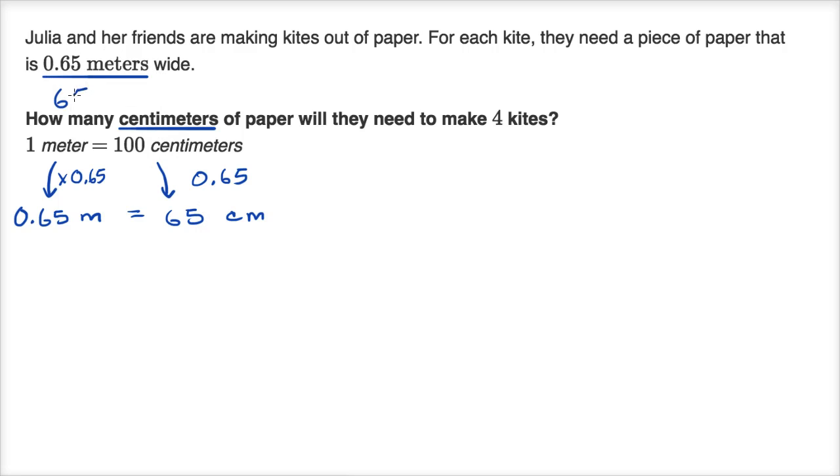Now they don't want just how much paper will they need to make one kite. They want four kites. So we would multiply this times four. This is how much we need per kite, so let's multiply that times four. Four times five is 20. Four times six is 24, plus two is 26. 260 centimeters of paper for the width of the four kites. Let's do one more of these. This is a volume conversion.